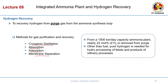Cryogenic distillation requires going down to around 120 Kelvin to recover hydrogen. Based on the temperature difference in boiling points, hydrogen will be the top product and the bottom product will be all the remaining gases.